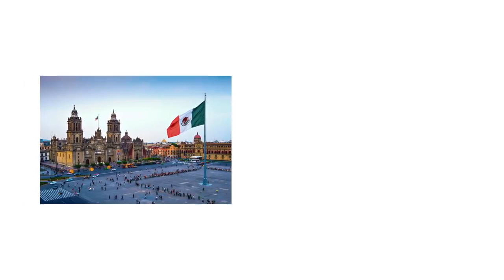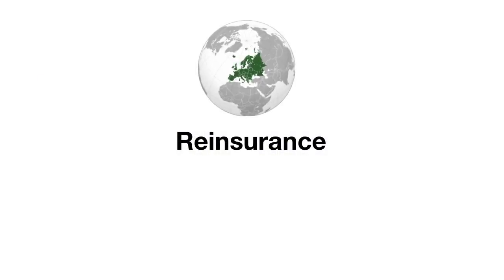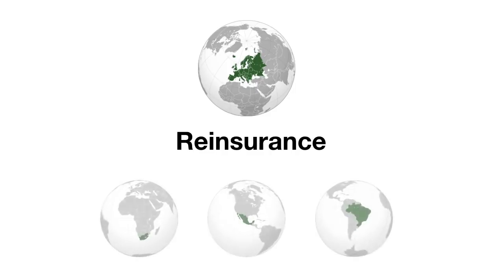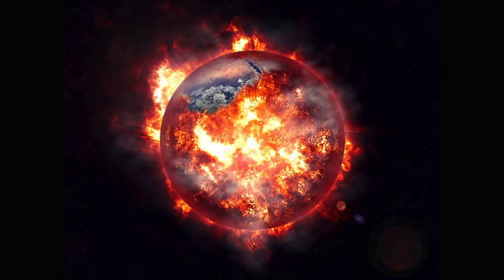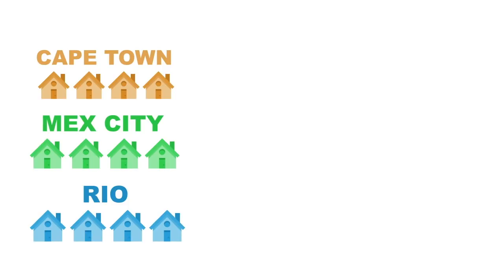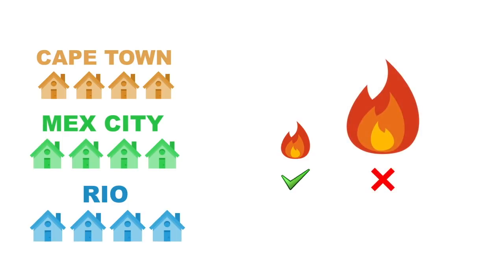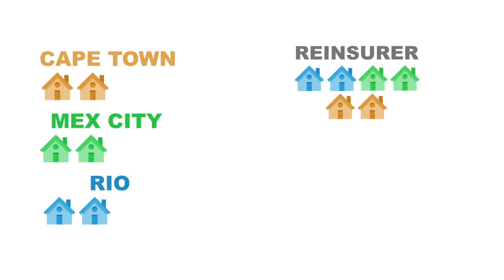An insurance company in Mexico City has the same problem, and so does one in Rio. To address this, a reinsurance company is set up — normally based in Europe — and they're going to be able to insure our companies in Cape Town, Mexico City, and Rio. Of course, if the whole world goes on fire, the reinsurance company is in trouble. Essentially, it takes the risk from multiple locations and shuffles them together so that the risks become more independent of each other.